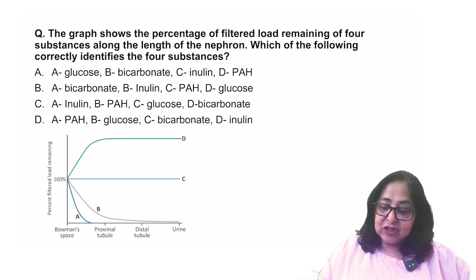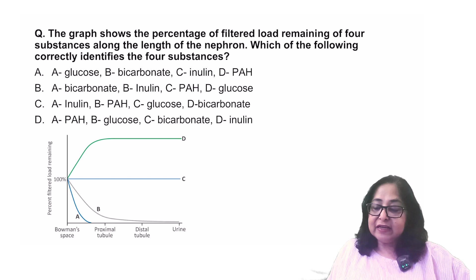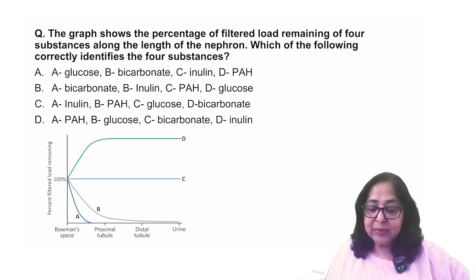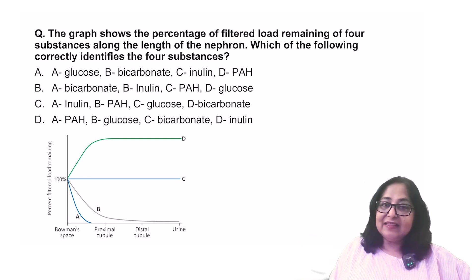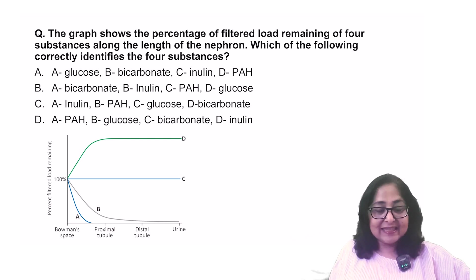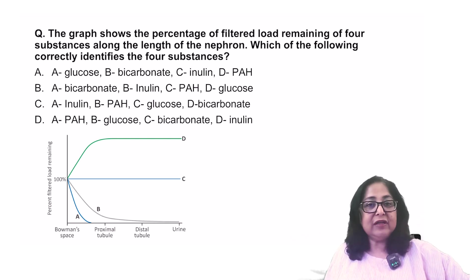Let us have a look at the next question. Now, this says, the graph shows the percentage of filtered load remaining of four substances along the length of the nephron. Which of the following correctly identifies the four substances? Now, if you look at this graph, we have got the length of the nephron on the x-axis and percentage of the filtered load remaining is on the y-axis.